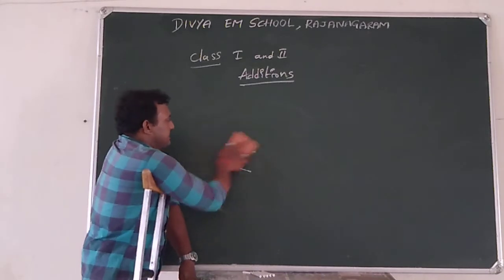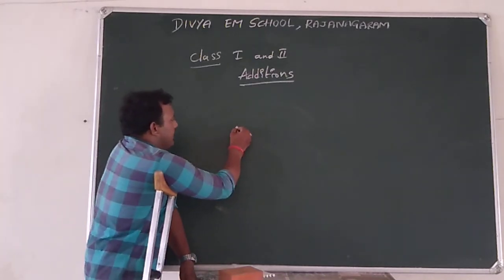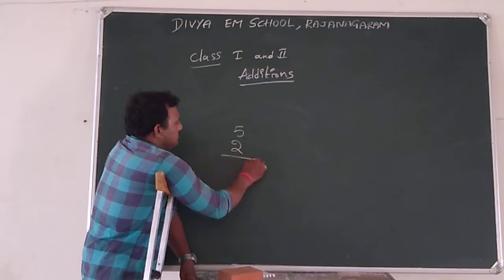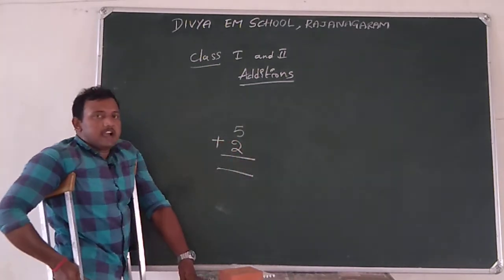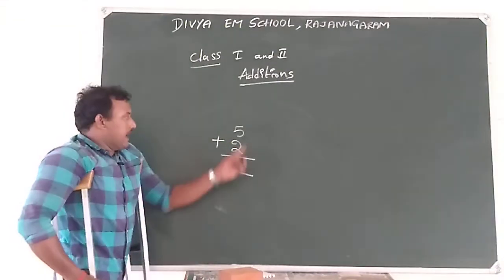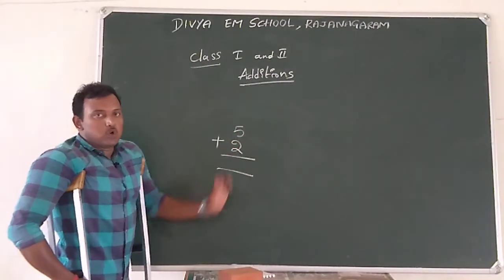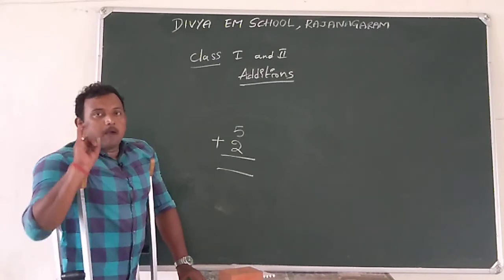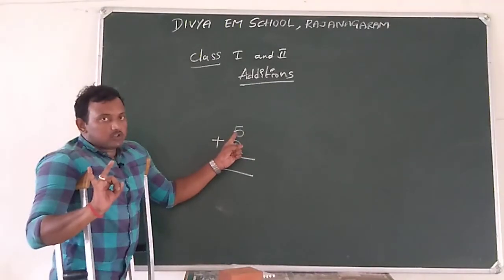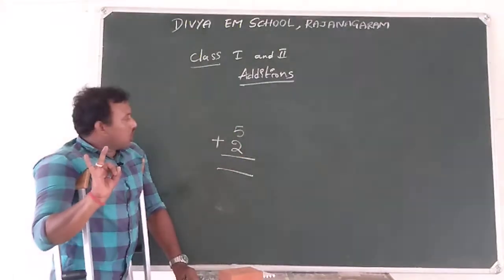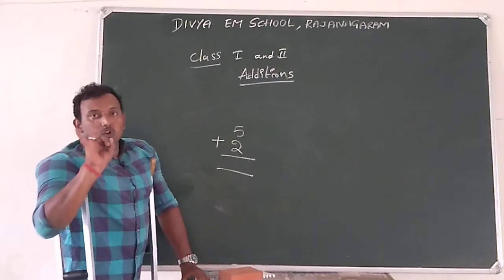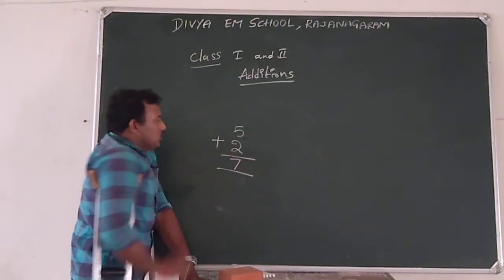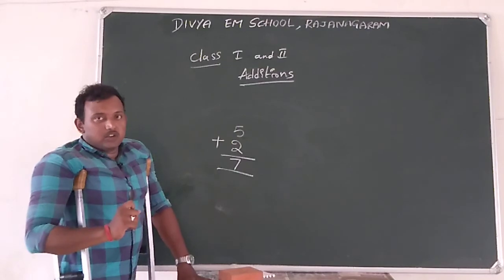I am going to tell you another example. We can do many examples. I am taking 5 plus 2. So the first number is 5 and the second number is 2. I am going to take 2 fingers. We are counting after 5: 6 and 7. So the total is 7. Like this, we can do many examples. Hope you all understood. Thank you.